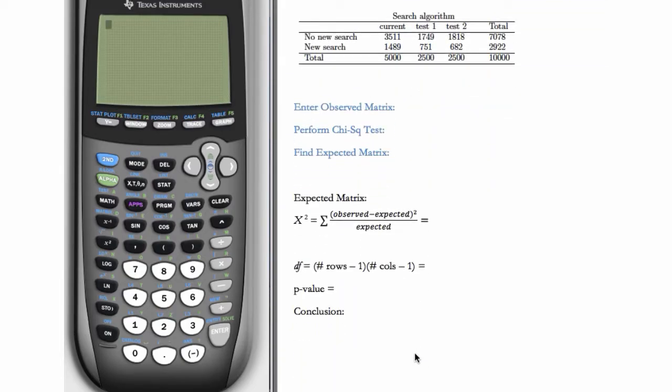Looking at our table again, in order to use the calculator to carry out this test, the first thing we have to do is enter the observed matrix. So to enter the observed matrix, which is going to be our observed data here, we're going to go to second x to the minus one, which is matrix. And then we're going to go over to edit and choose matrix one, which is A.